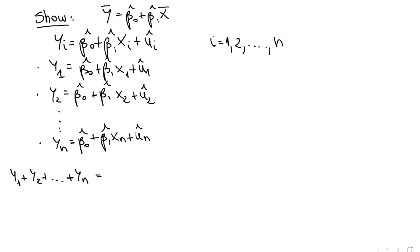And this is going to equal, well, I'm going to have all the beta naughts. So it's going to be beta naught hat plus beta naught hat plus n times beta naught hat. Let's just put a parenthesis here.